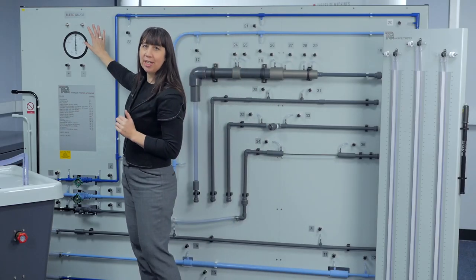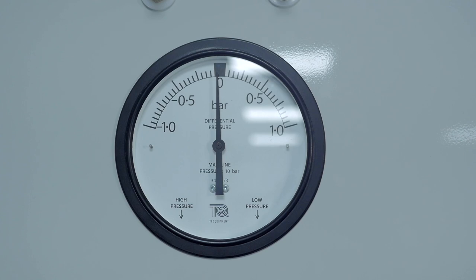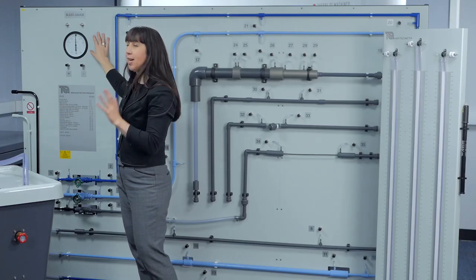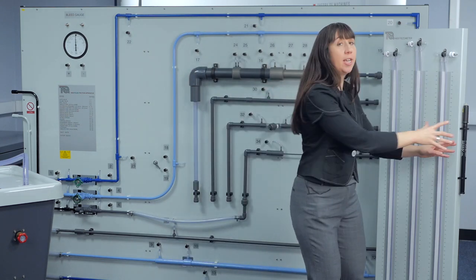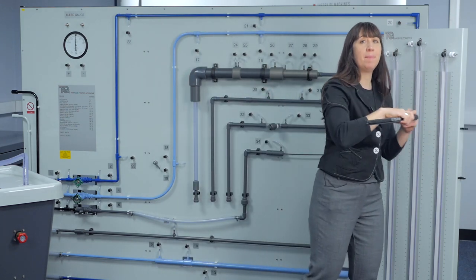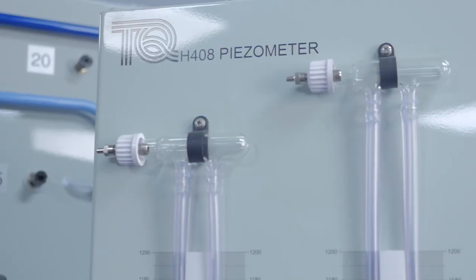A differential pressure gauge is used to measure the higher differential pressure across the valves and strainer. To adjust the date and water level in the tubes of the piezometer, students can connect a hand pump to the air valve above the tubes.